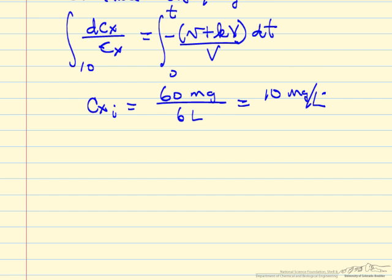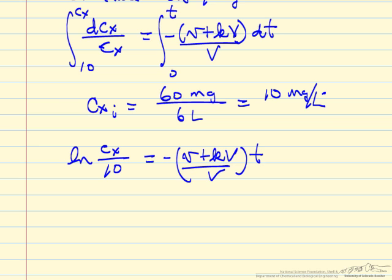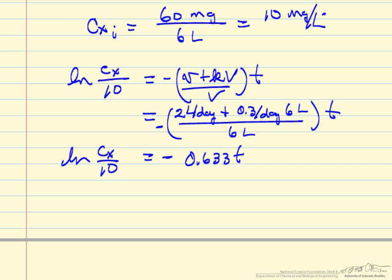Integrating this equation from initial concentration 10 to some general time and concentration gives: log(Cx/10) equals minus constant times T. Substituting the numbers gives the equation for concentration at any time, where the units of time is days and concentration is milligrams per liter.